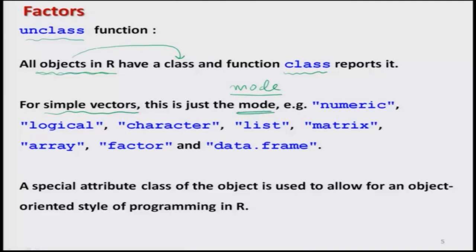In simple language, we already know the mode function — M-O-D-E — which tells us the mode of the object: whether it is numeric, character, list, or something similar. When dealing with simple vectors, this class concept is the same as mode. It will tell us whether the object is numeric, logical, character, list, matrix, array, factor, or data frame. We have not done data frames yet, but we will do so in forthcoming lectures.